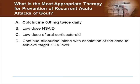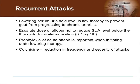The correct answer for this case is colchicine 0.6 milligrams twice a day. The patient's creatinine was 1.0 milligram per deciliter, meaning he has normal kidney function. Treating the acute attacks of gout will not prevent gout from progressing to chronic arthritis, and it is necessary to provide prophylaxis as we escalate the dose of urate-lowering treatment. Dissolution of crystal deposits leads to a reduction in acute attacks, and the serum uric acid level should be below the threshold for urate saturation, which is 6.7 milligrams per deciliter. The appropriate target determined in clinical trials is less than 6 milligrams per deciliter.